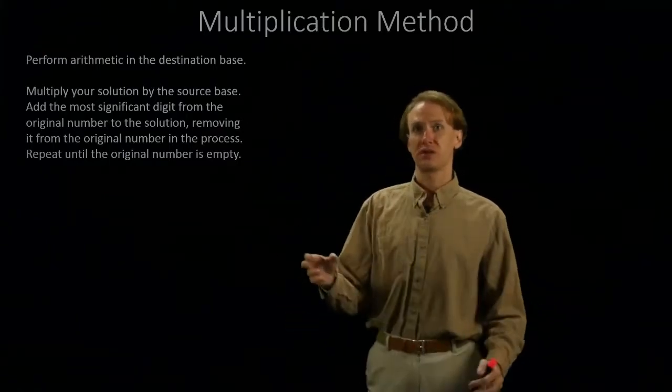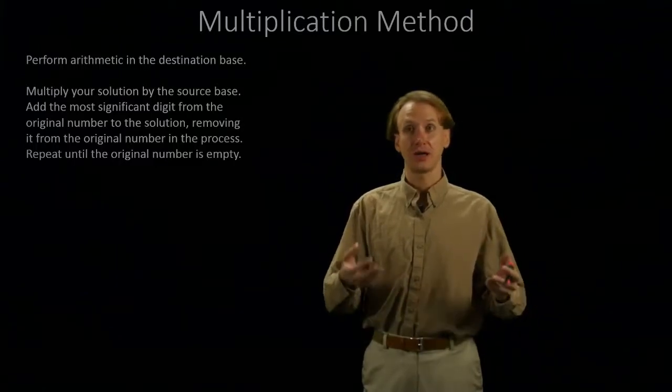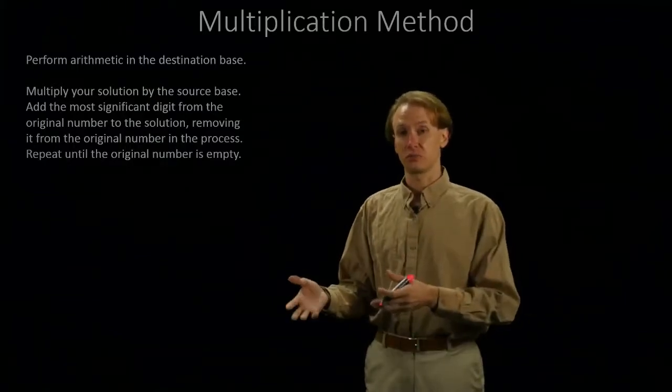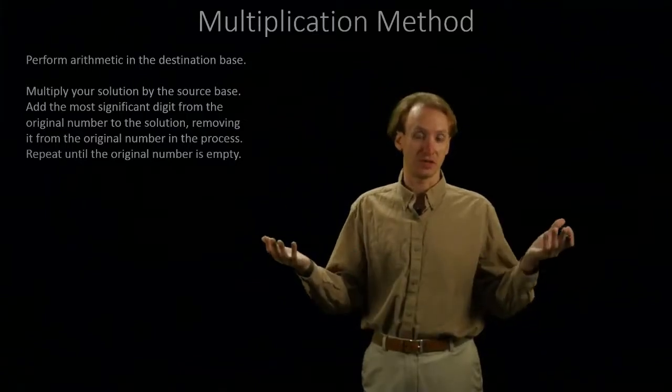So, the multiplication method tells you to take our solution, multiply by the source base, and then add in the most significant digit from our original number, and remove it from the original number at the same time, and then just repeat this process until we run out of digits to work with.